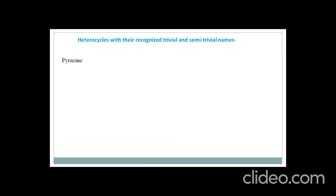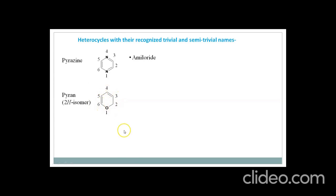Next is pyrazine, which has 2 nitrogens in a 6-membered ring at the 1,4 positions relative to each other. An example of a drug with this ring is amiloride, which is used as a diuretic. The last one is pyran, which is a 2H isomer because at the 2nd position there is an extra hydrogen present, giving a CH2 group while all others are CH.